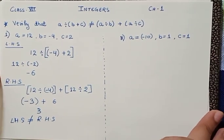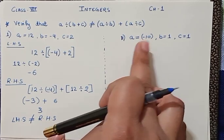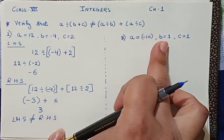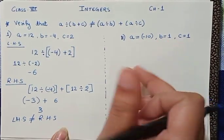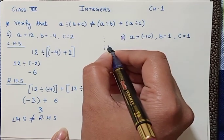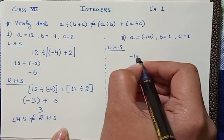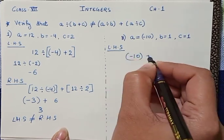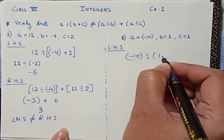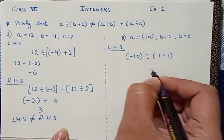Coming to the next question, the value of a is minus 10, b is 1, and c is 1. Now putting this in the left-hand side, we have (-10)÷(1+1).